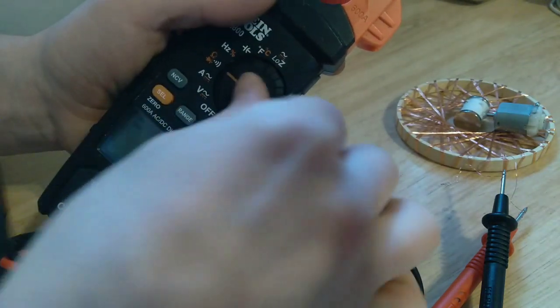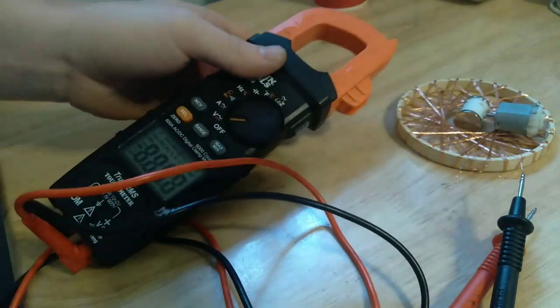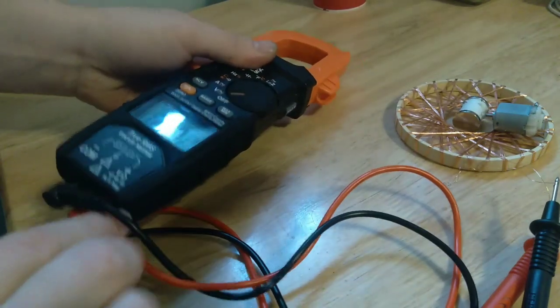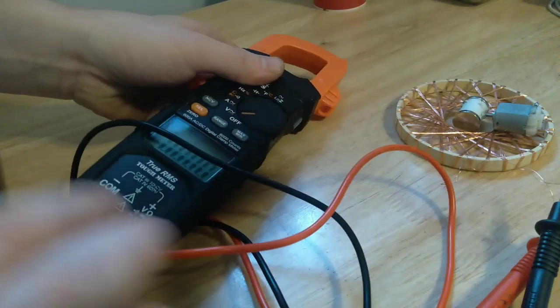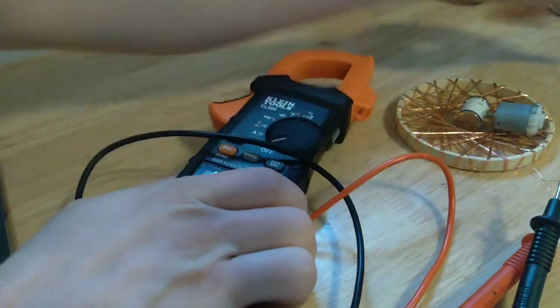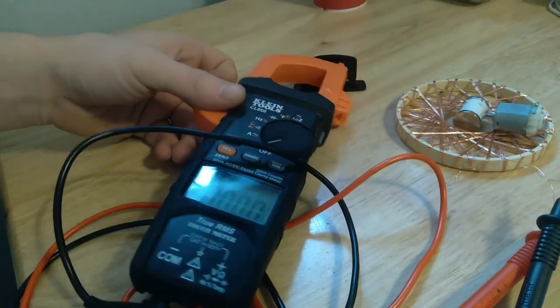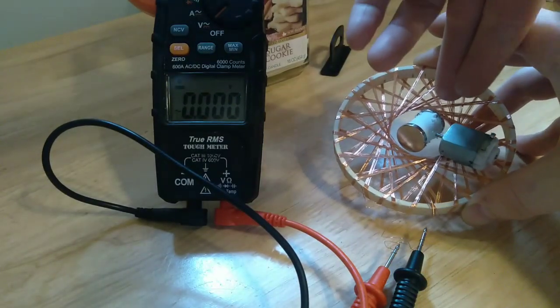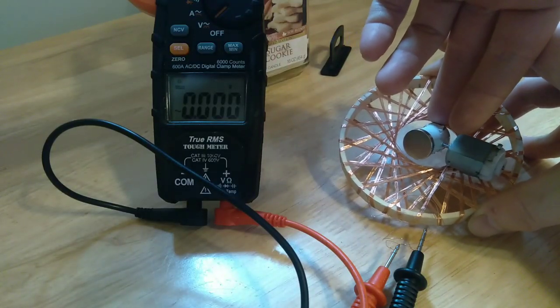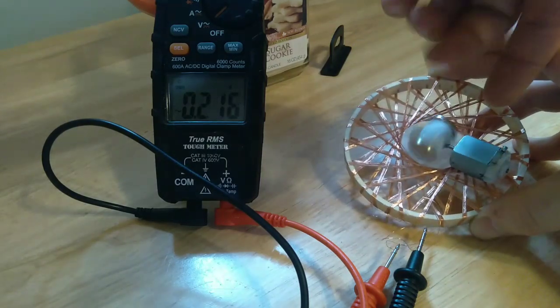I'm going to turn it to volts and show you how many volts it produces if I finger spin it. Let me get this voltmeter set up so you guys can see it. I'm going to show you what the voltage produces just with a flick of the finger here. Look at that, 200 millivolts right there.